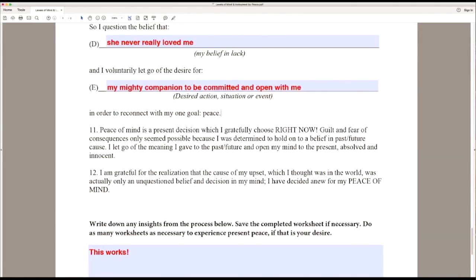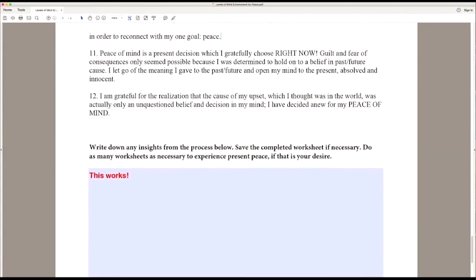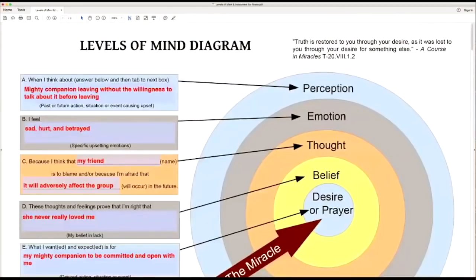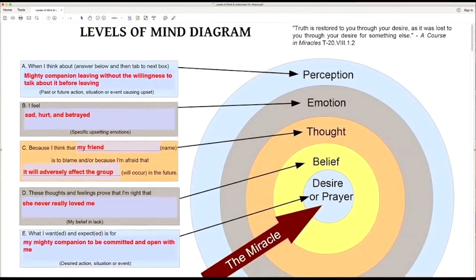So this is the first step that we really oftentimes can't skip to that deeper level until we look at who outside of me seems to be reflecting this back. If we go down to the levels of mind diagram, Nicholas, I just want to show you what this looks like in visual form. Perception, you see this mighty companion, she left the group. How did it feel to you? Sad, angry, hurt and betrayed.